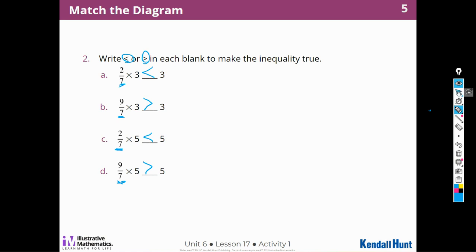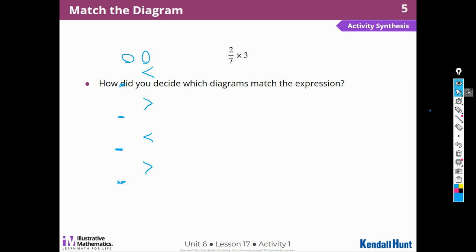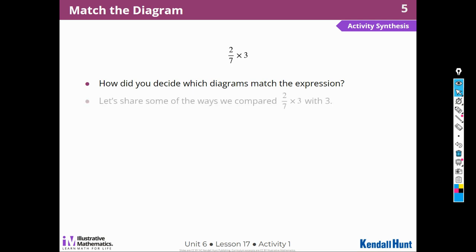How did you decide which diagrams matched with each expression? For the area diagram, I looked at the rectangle with a length of 3 and a width that was less than 1, and matched it to the fraction that was less than 1. So 2 sevenths times 3 — I found the area diagram with a length of 3 and a width less than 1. For the number line, I picked the one with 3 and a point that was less than 3. The way I compared 2 sevenths times 3 with 3 was: if the fraction is less than 1 times 3, then the product is going to be less than 3.